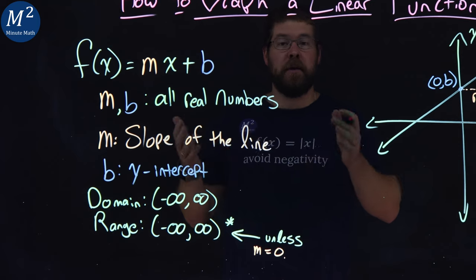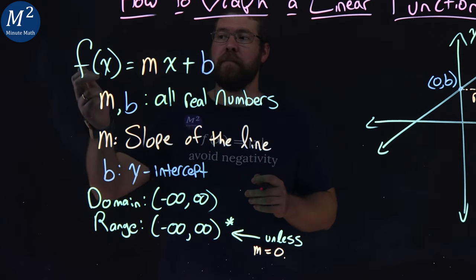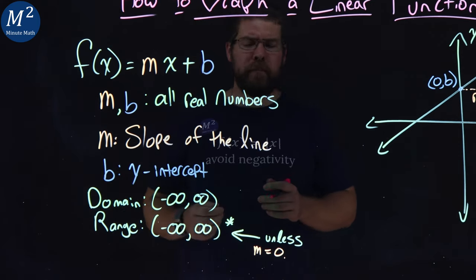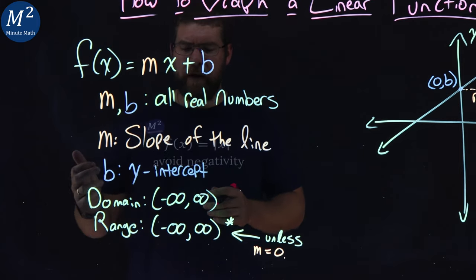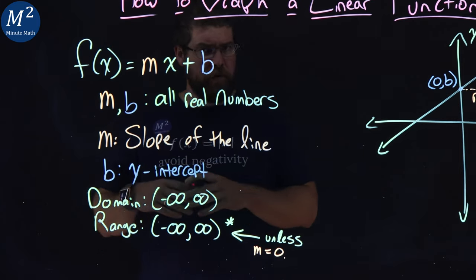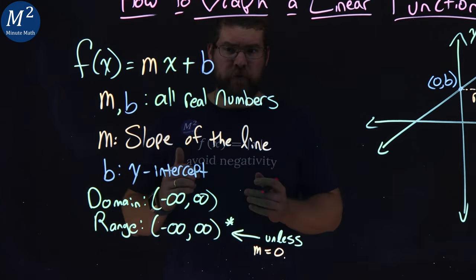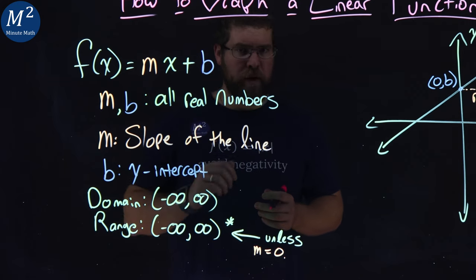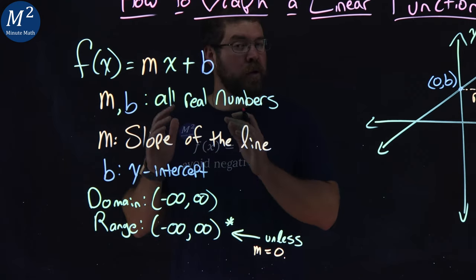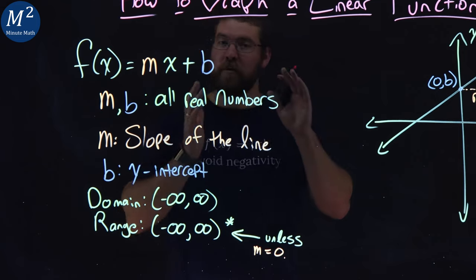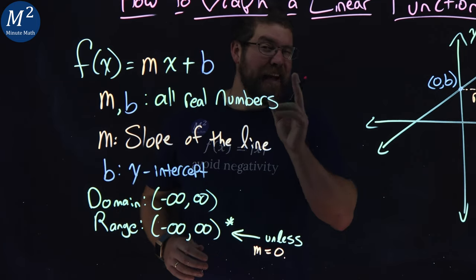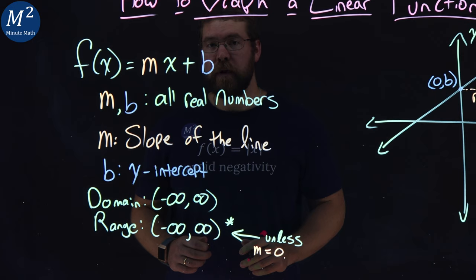Now one thing we should note about these linear functions in this form, f of x equals mx plus b, is they have a domain and range. The domain will be from negative infinity to positive infinity if m and b are all real numbers, and the range will also be from negative infinity to positive infinity, unless one little thing, our slope is equal to zero.